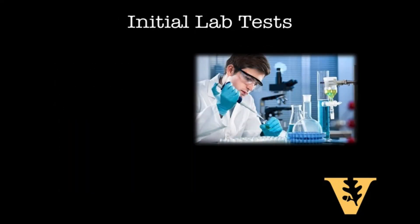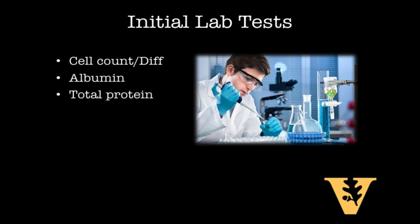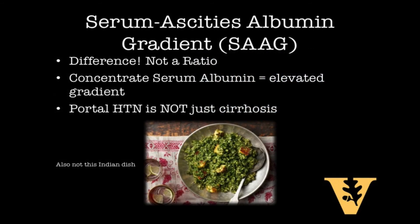The initial lab tests we should order include the cell count with differential, albumin of the ascitic fluid, total protein of the ascitic fluid, and culture bottles should be inoculated at the bedside. With this, we can calculate the most important index in ascitic fluid, the SAAG, or the serum ascites albumin gradient.